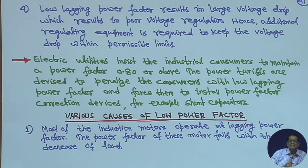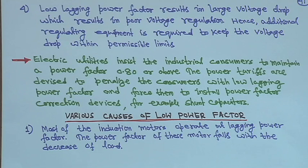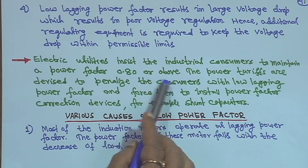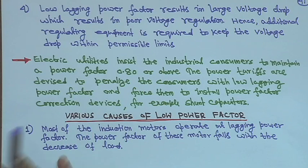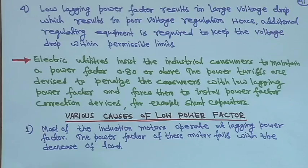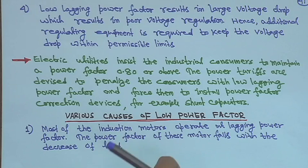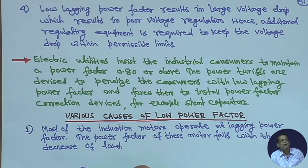We always want any system to operate at unity power factor, though in reality it may not be possible. Electric utilities insist that industrial consumers maintain a power factor of 0.8 or above. Industries have different parts of tariff — sometimes charged on kilowatt rate, kilowatt demand, or kVA demand — and if the power factor is poor, kVA demand will be more, leading to higher tariff.